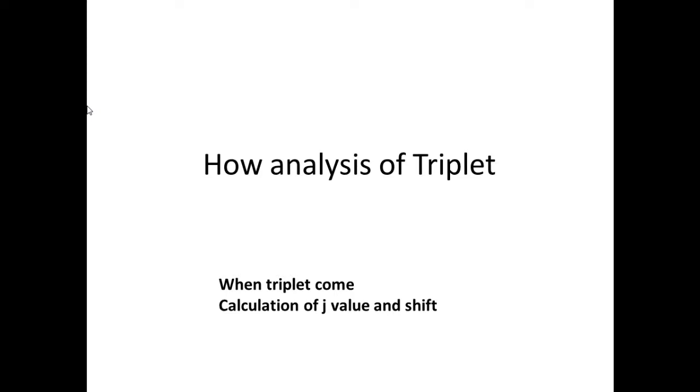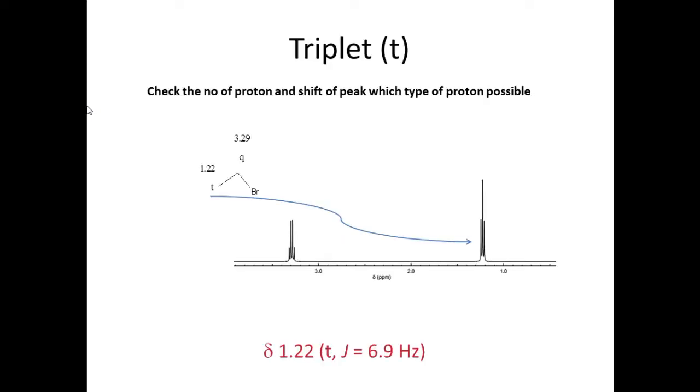How to calculate the J value and shift value of the triplet peaks. So how the triplet arises - the number of protons and shift of the peak, which type of proton is possible, we will look.